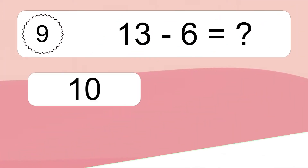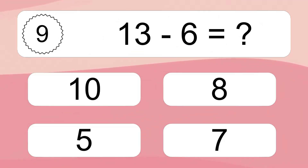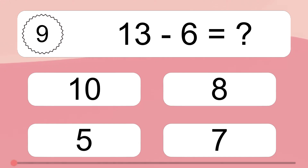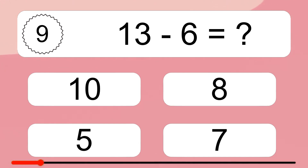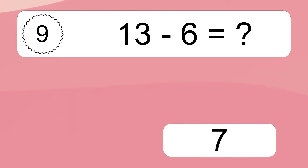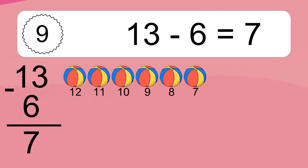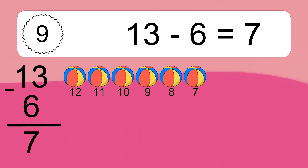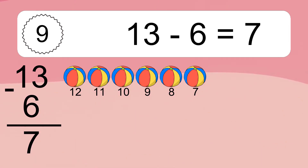13 minus 6 equals what? 13 minus 6 equals 7. Let's count it: 12, 11, 10, 9, 8, 7.